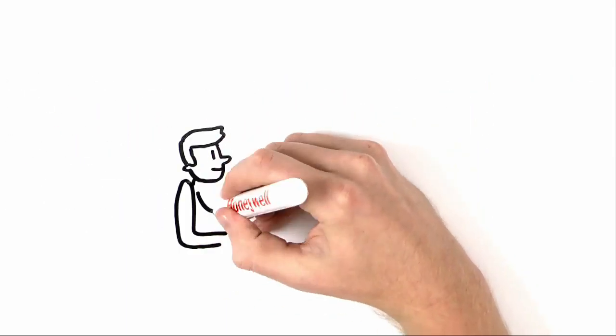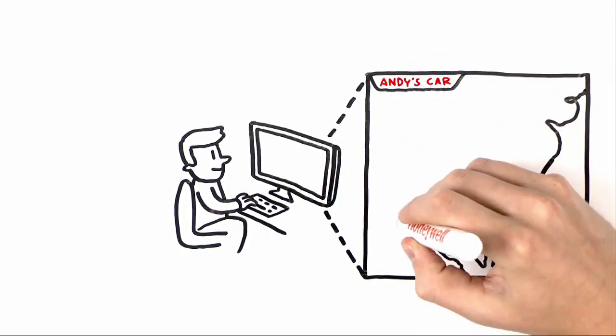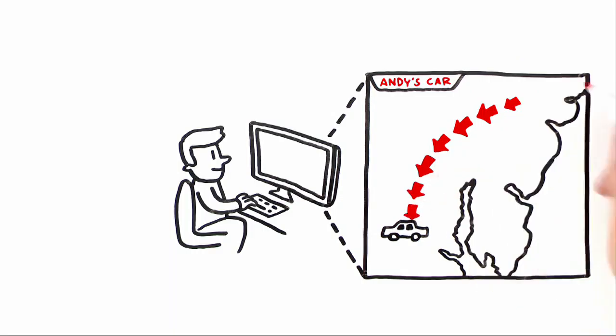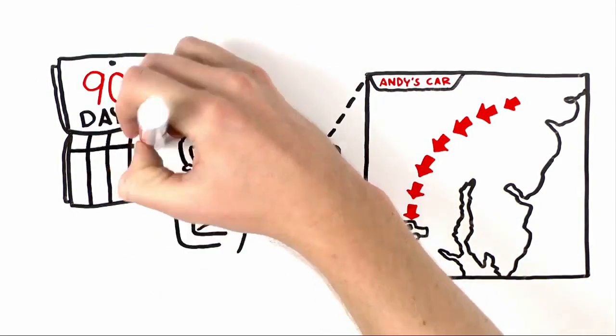Honeywell Total Connect tracking services even gives you the ability to track the history of an event so you can see exactly where the vehicle or asset has been. And you can go back in time up to 90 days to track previous events.